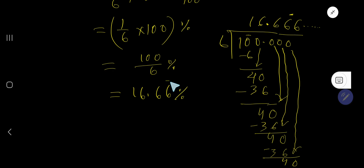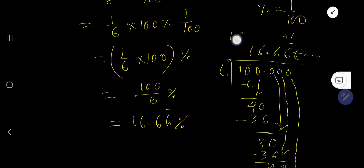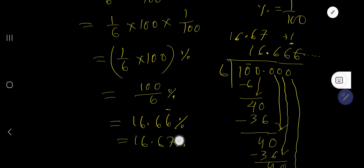Alternatively, if you round the repeating six, you add one to the previous digit, giving sixteen point six seven. So the answer is either sixteen point six six six... percent with a repeating bar, or sixteen point six seven percent.